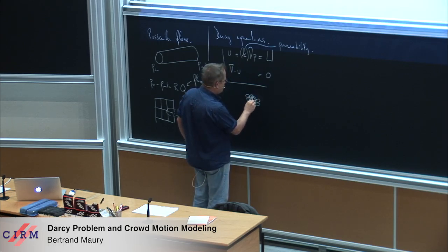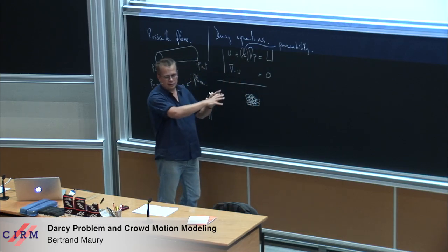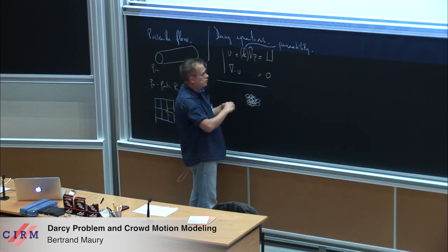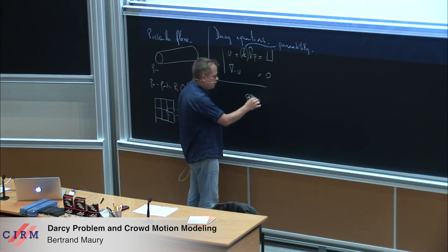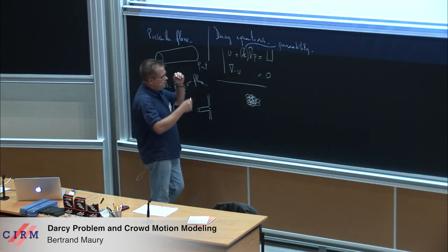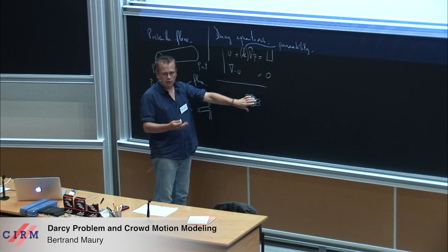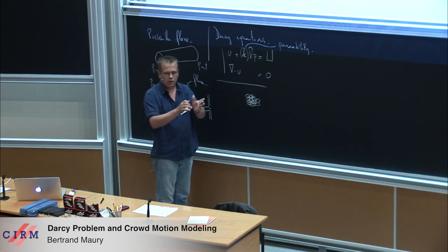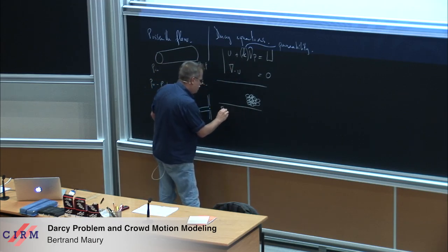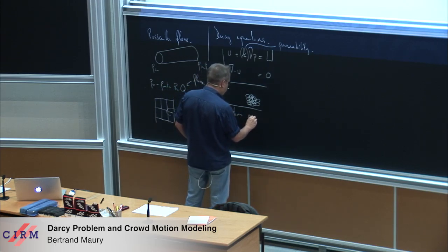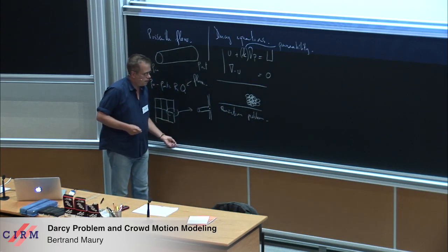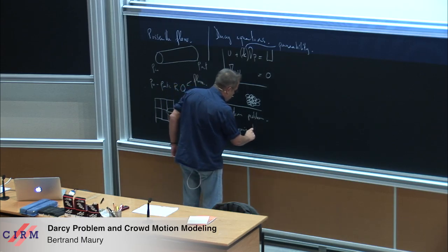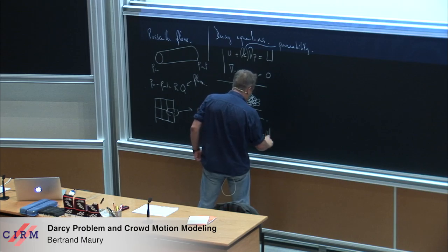At the scale of the grains, you have a fluid obeying Stokes equation. There are many works showing an asymptotic expansion — a real limit in the mathematical sense — from the Stokes equation in a very complicated geometry toward the Darcy equation. It can be interpreted, and this will be important for what follows, as a minimization problem. It can be shown quite easily that U is actually the minimizer in L2 of omega.